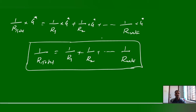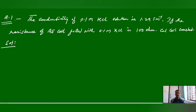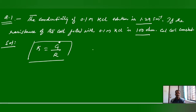Now we will look at some numerical problems related to these formulas — covering conductance, resistance, specific conductance, molar conductance, and equivalent conductance. Question 1: The conductivity of a KCl solution is 1.29 siemens per meter and the resistance is 100 ohms. Using K equals cell constant divided by R, the cell constant equals 1.29 times 100, giving 129 meter inverse.